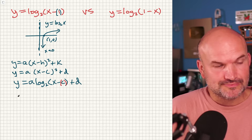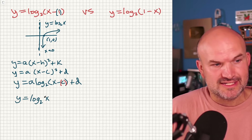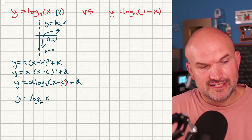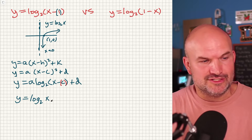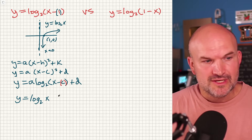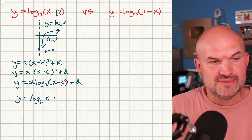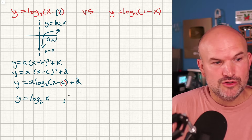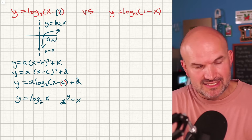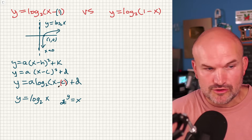To understand logarithm values, when I have log base 2 of x, a lot of students get confused just seeing the log. What I like to do is rewrite it in exponential form. The exponential form would be 2 to the y equals x. You can always think of your base being raised to this power equaling the argument of your logarithm.